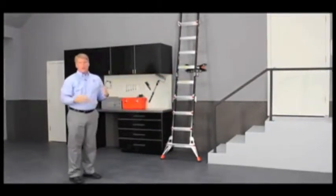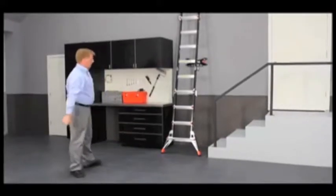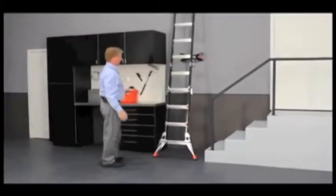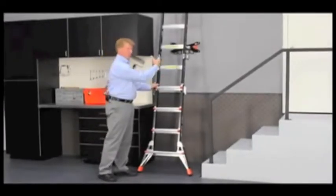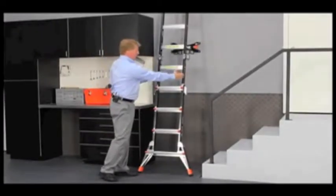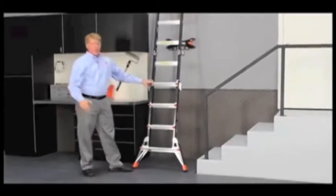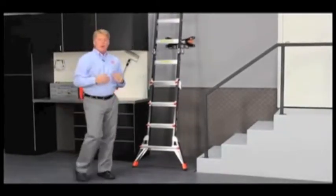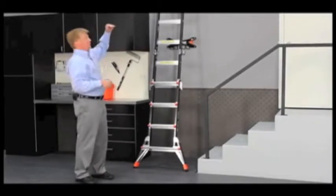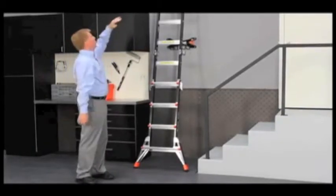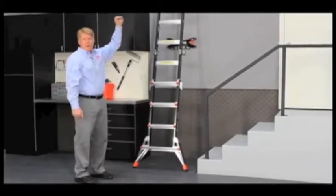While we have the ladder in this extension ladder position, I want to talk a little bit about some of the safety items with extension ladders. Like other ladders, when you're climbing you want to make sure that you keep your body centered between the two side rails, and you want to use the same three point of contact rule as you climb up and down. If you're climbing up onto a roof, you want to make sure that you have three feet of ladder above the roof line.